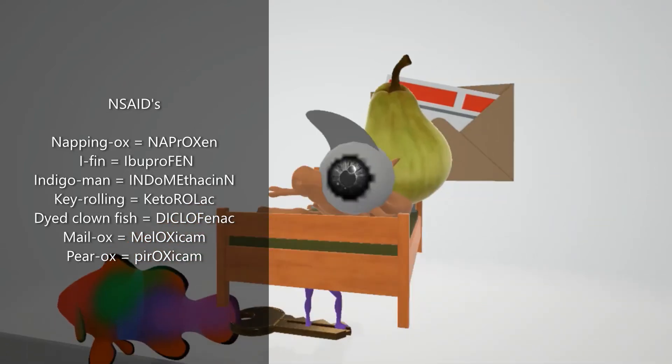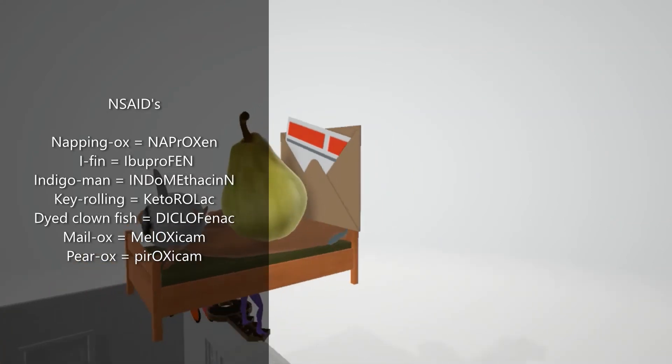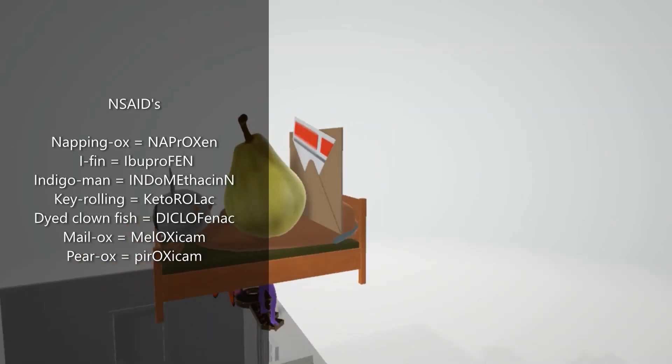With the ox over here, we notice two things. Inside the ox, we have the male and the pear, the male and the pear and the ox, for meloxicam and piroxicam.